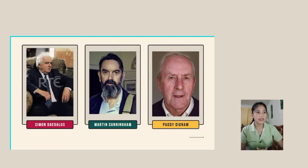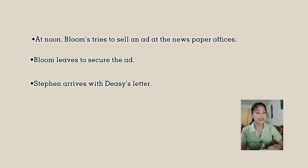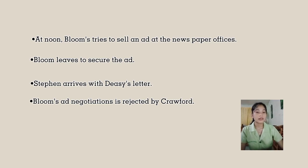The men treat Bloom as somewhat of an outsider. At the funeral, Bloom thinks about the death of his son and his father. Bloom was not close to Dignam, but he spends time thinking about death. He recalls his own father Rudolf, who committed suicide, and his son Rudy, who died in infancy. At noon, Bloom tries to sell an ad at the newspaper offices. Several men, including editor Myles Crawford, are hanging around the office discussing political speeches. Bloom leaves to secure the ad. Stephen arrives at the newspaper with Deasy's letter, and Stephen and the other men leave for the pub just as Bloom is returning. Bloom's ad negotiation is rejected by Crawford, the editor. Stephen is well-liked by the newspaper men, but Bloom is not. Bloom leaves and eventually places his ad.